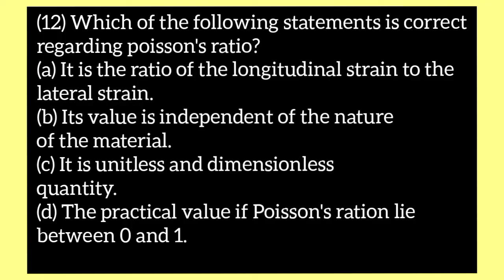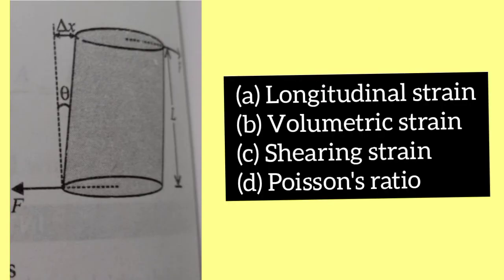Which of the following statements is correct regarding Poisson's ratio? Option A it is a ratio of longitudinal strain to the lateral strain. Option B its value is independent of the nature of the material. Option C it is a unitless and dimensionless quantity. Option D the practical value of Poisson's ratio lies between 0 and 1. The answer is option C, it is a unitless and dimensionless quantity.